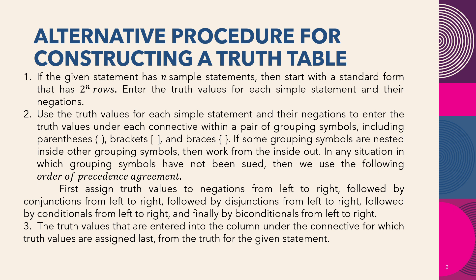The alternative procedure for constructing a truth table: given a statement, start with a standard form that has 2-to-the-n rows. Enter the truth value of each simple statement and their negations. Use the truth values for each simple statement and negation to enter the truth values under each connective within a pair of grouping symbols.